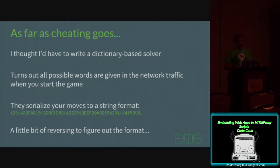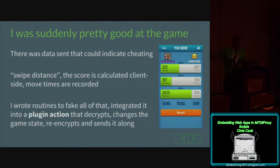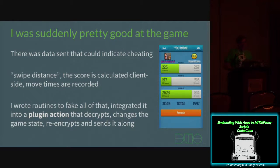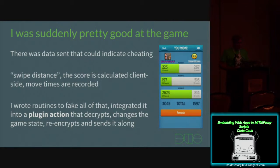They have a move string format that required a bit more Java reversing, and it was easy to write a Python implementation. Suddenly I was really good at the game — my score jumped an order of magnitude. There was some data sent along that could possibly indicate cheating, so I faked and fudged that to evade detection. They record swipe distance and the time you play each word. I played a couple of legitimate games, took averages, and added a little fudge factor.